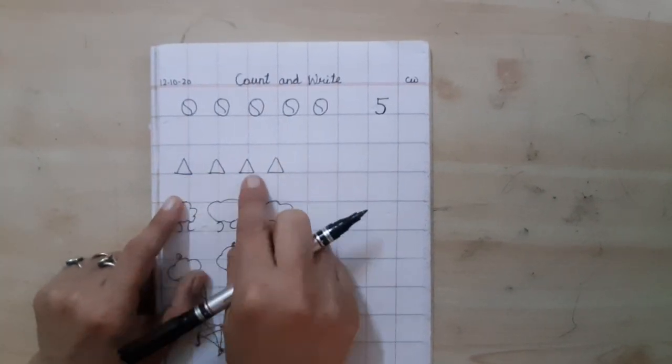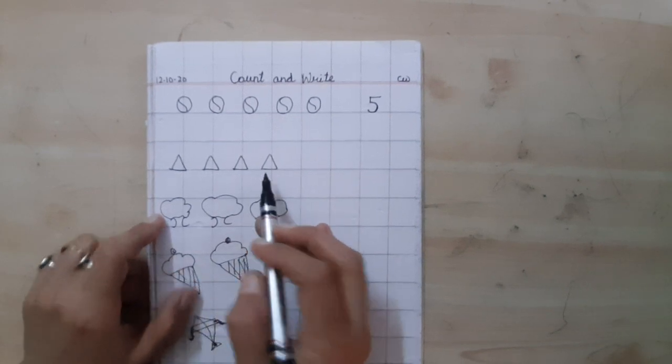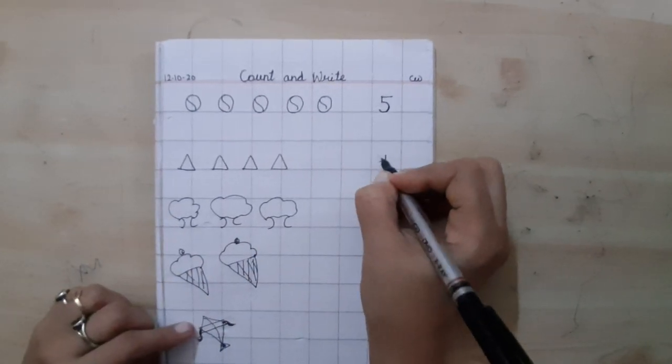This is triangle. 1, 2, 3, 4. Write down 4.